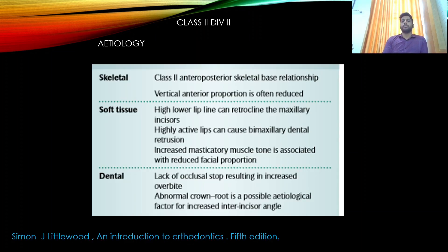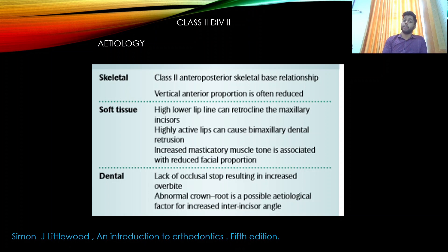The etiology of Class 2 Division 2 includes skeletal, soft tissue, and dental factors. Skeletally, there is a Class 2 anteroposterior skeletal base relationship with reduced vertical anterior proportion. Soft tissue factors include a high lower lip line that can retrocline maxillary incisors, a highly active lip causing bimaxillary dental retrusion, and increased masticatory muscle tone associated with reduced facial proportion. Dentally, lack of an occlusal stop results in increased overbite, and abnormal crown-root angulation is a possible etiological factor for an increased inter-incisor angle.